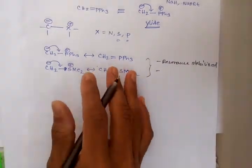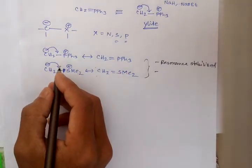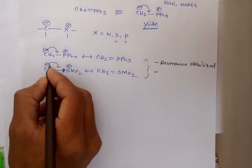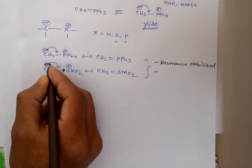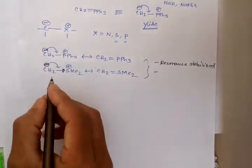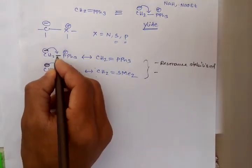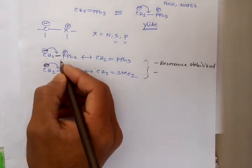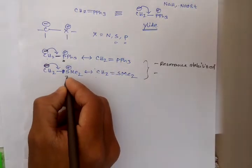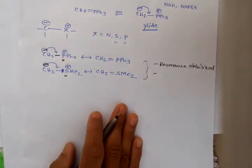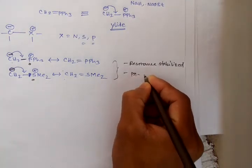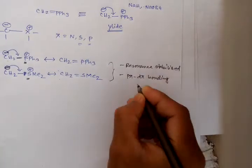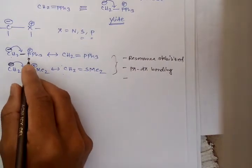Because of the lone pair that can involve in p-pi d-pi bonding with the d orbital of phosphorus and sulfur atoms. There is p-pi d-pi bonding due to presence of d orbitals of sulfur and phosphorus atoms.